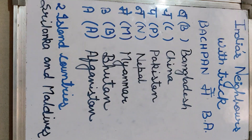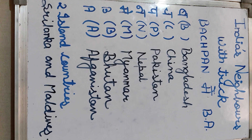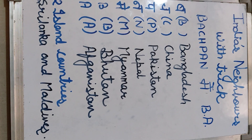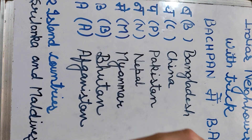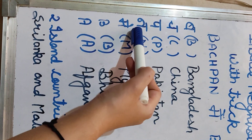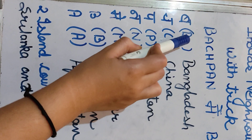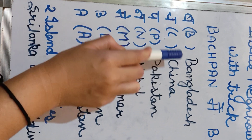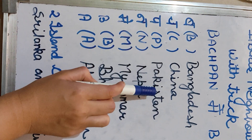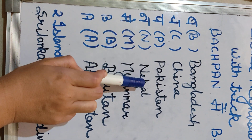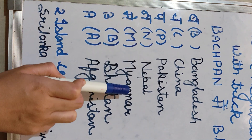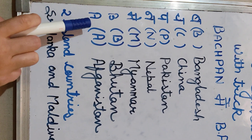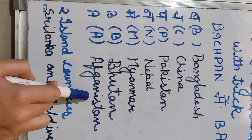Sometimes it becomes very tough to learn all these neighboring countries, so today I'm going to tell you a trick: 'Bachpan Mein BC' — where B shows Bangladesh, Ch shows China, P shows Pakistan, N shows Nepal, M shows Myanmar, B shows Bhutan, and A shows Afghanistan.